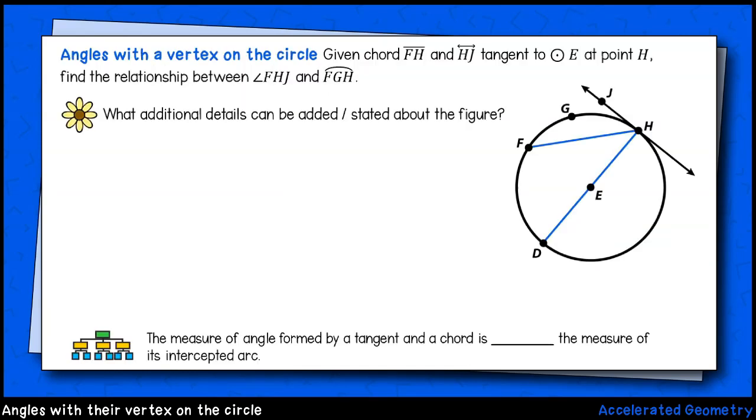Now let's extend the possibilities a bit further. This time, I have a line drawn tangent to circle E. A tangent line intersects the circle itself at exactly one point, the point of tangency. In this case, that point is H.